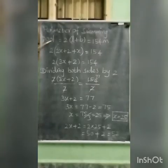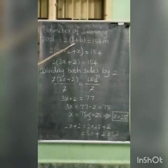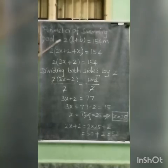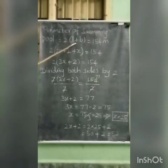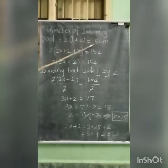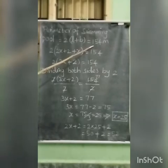The perimeter of the swimming pool equals 2 into L plus B. The swimming pool is rectangular in shape, so the perimeter formula is 2 into L plus B. Therefore, the perimeter of the swimming pool is equal to 2 into L plus B, which equals 154 meters.